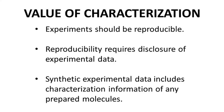A vital idea for experimentation is that if you perform an experiment and disclose how you did the experiment, someone else should be able to repeat the experiment and get the same result. This is reproducibility. The result for a synthetic organic chemist is often the preparation of a molecule. Part of reproducibility for a synthetic experiment is to report evidence that you made the molecule that you claim to have made. The evidence is your experimental and characterization data.